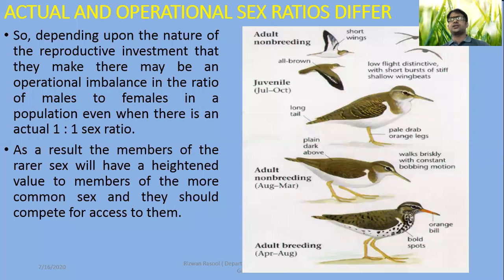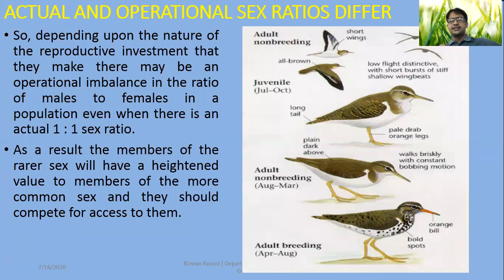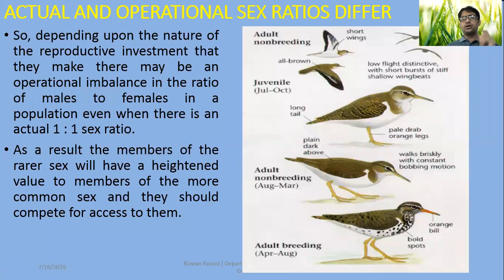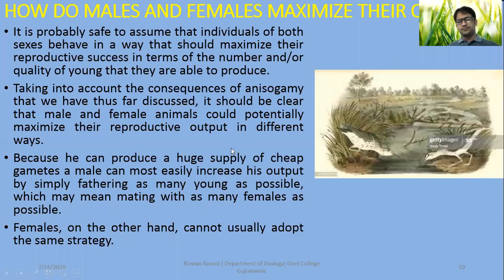Depending upon the nature of the reproductive investment and how much time is devoted to it, there may be an operational imbalance in the ratio of males to females in a population — even when there is an actual one-to-one ratio. As a result, the members of the rarer sex will have heightened value. If males are few, their value is heightened and females will compete for males. If females are few, their value is heightened and males will compete for access to females.